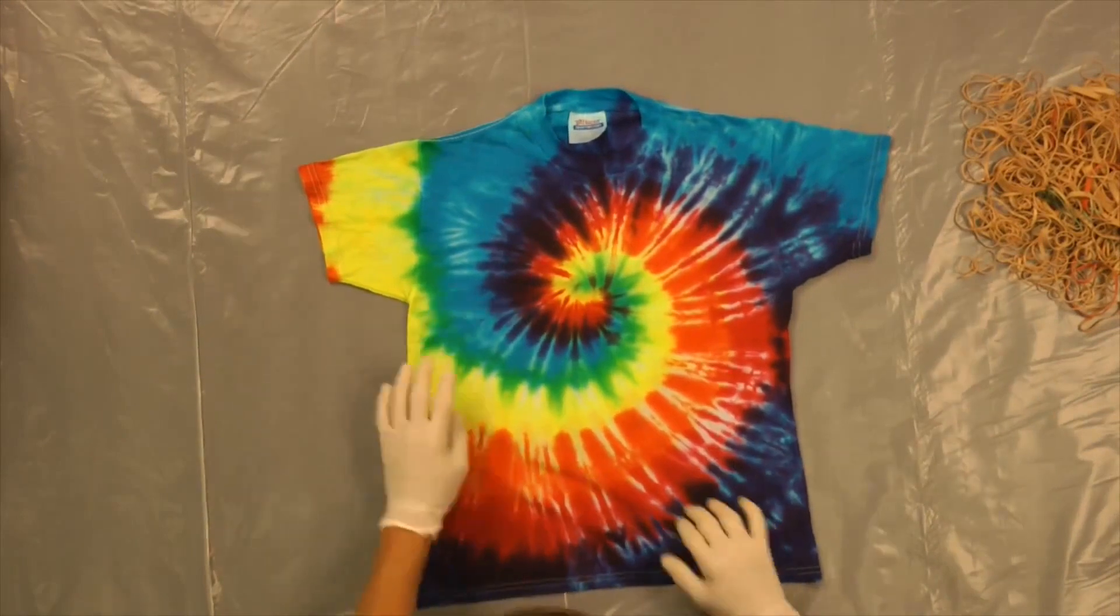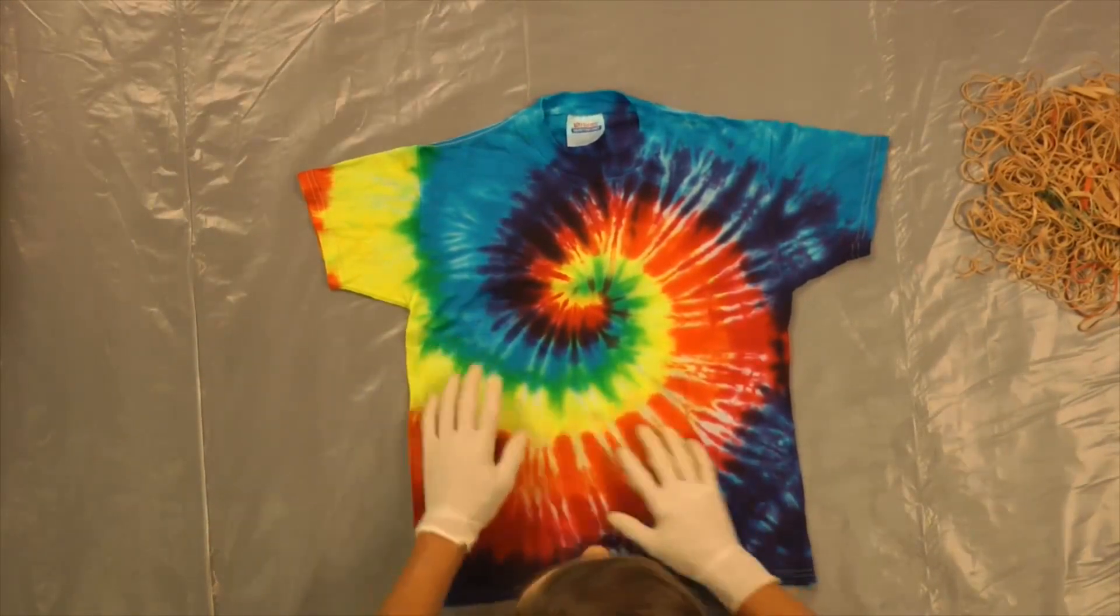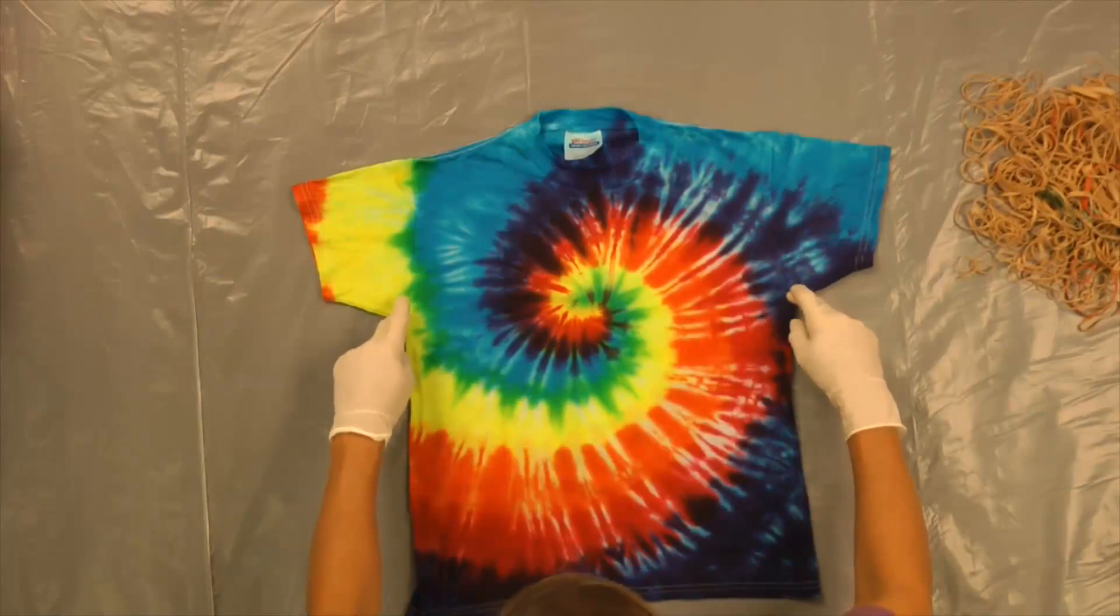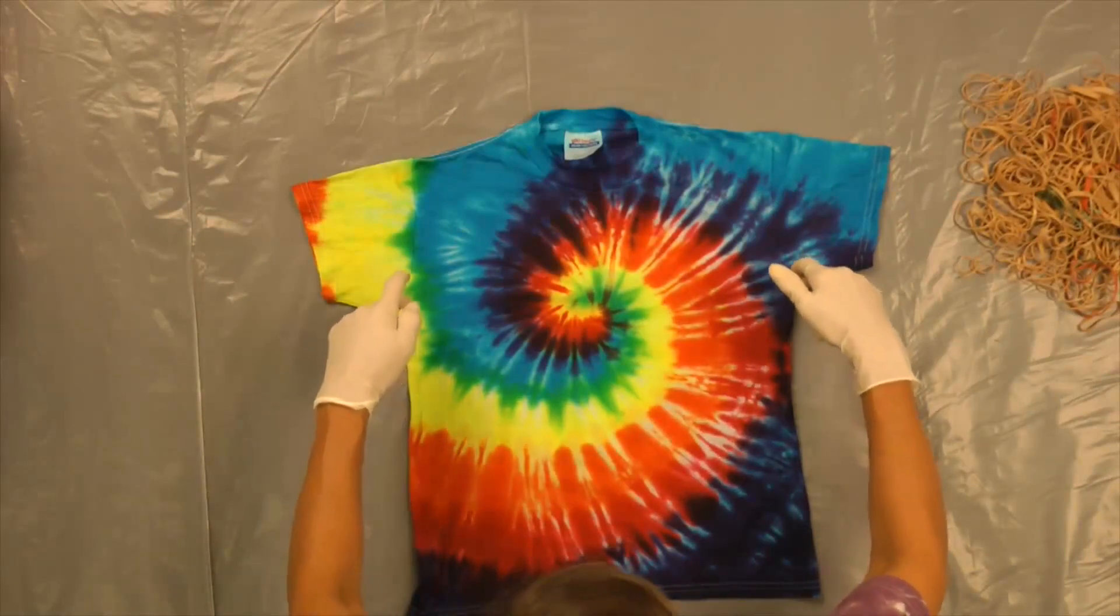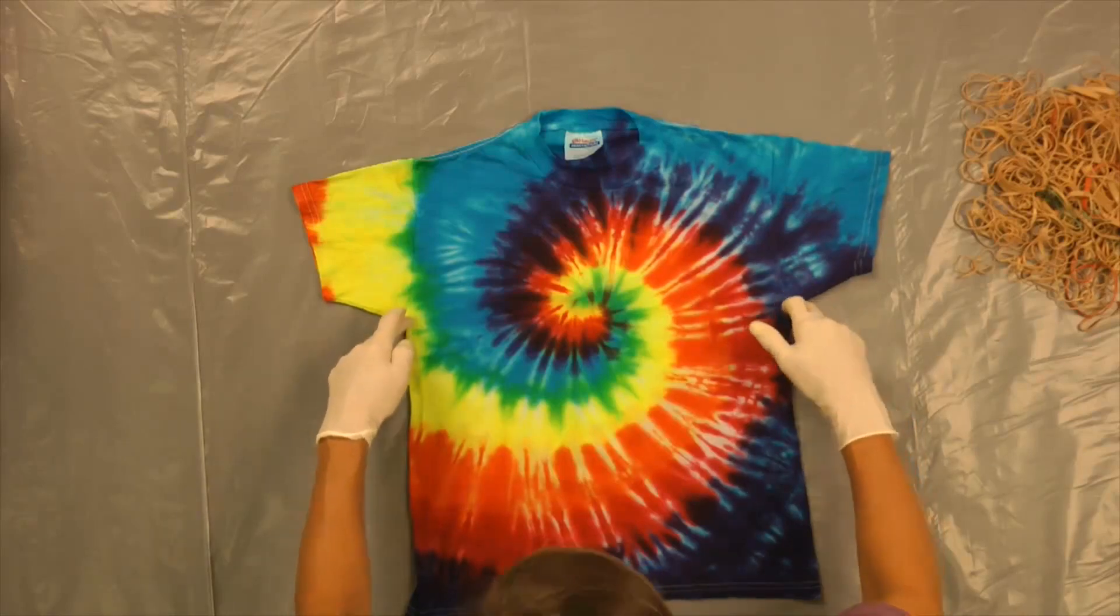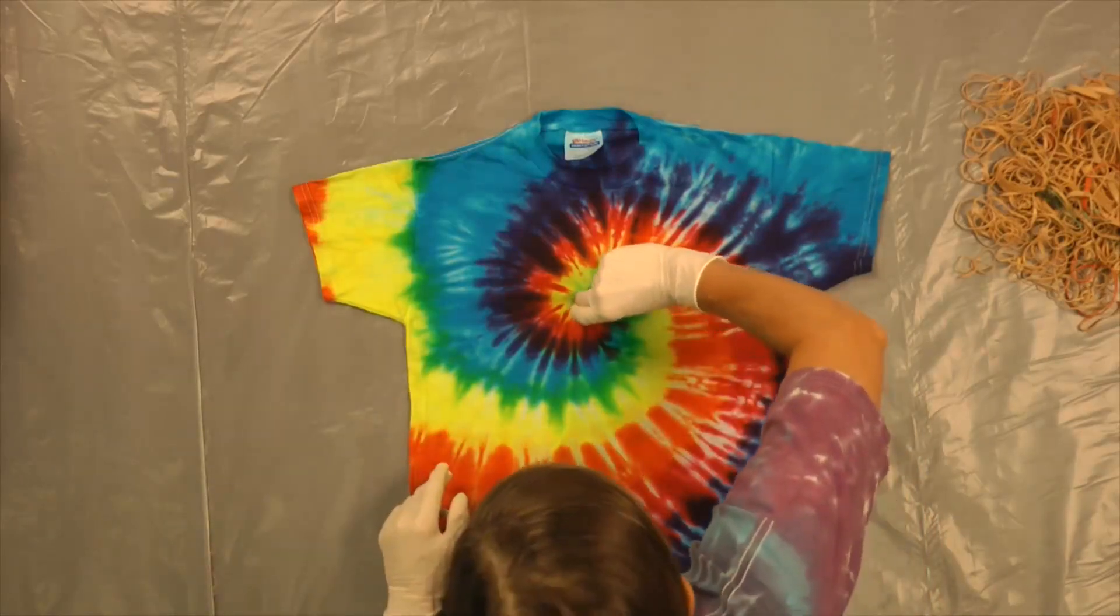We're going to start with a finished shirt so you can see the process in reverse. The center spiral - you reach to a point centered between the armpits to start your spiral.